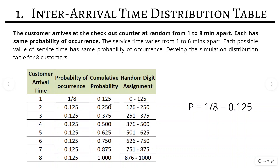Now we calculate cumulative probability, which is the probability of a customer arriving at a particular time or less. For the first arrival time it is 0.125. For the second, it is 0.125 plus 0.125, which is 0.250. For the third, it is 0.250 plus 0.125, which is 0.375. For the fourth, it is 0.375 plus 0.125, which is 0.500. For the fifth, 0.500 plus 0.125 is 0.625, and so on until 8. Now we assign random digits for each arrival time.